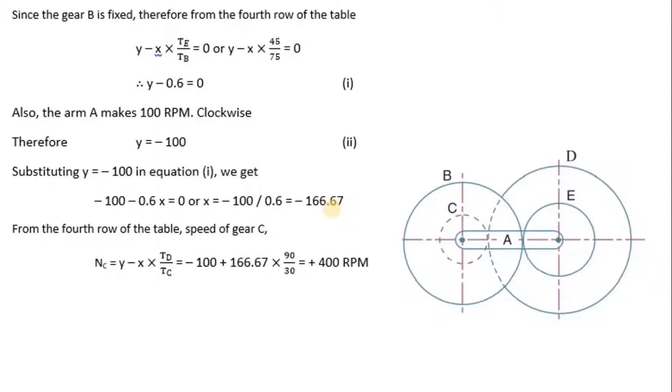So from the fourth row of the table, speed of gear C that is NC will be y - x × TD/TC. We know y, we know x, so substitute them, TD is known, TC is known and that comes to 400 RPM. So plus sign indicates that gear C also rotates in counterclockwise direction.